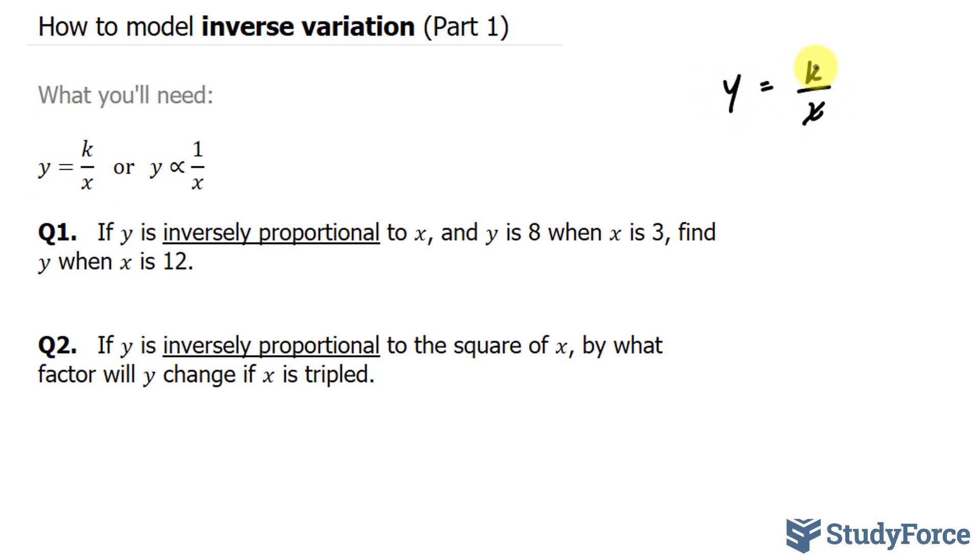k represents our constant. So we are given a point, and the point is (3, 8), and they want us to find out what the y coordinate is when the x coordinate is 12. So let's go ahead and solve for k first, then subsequently input k back into the equation and input x as 12.